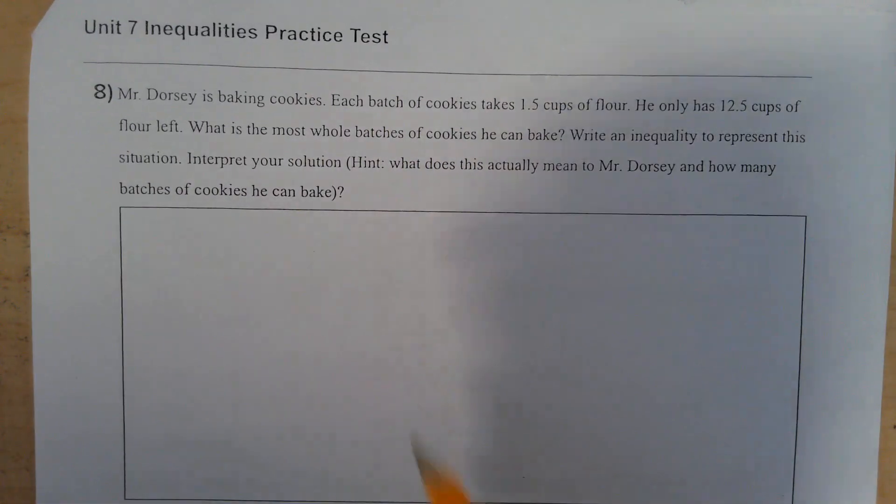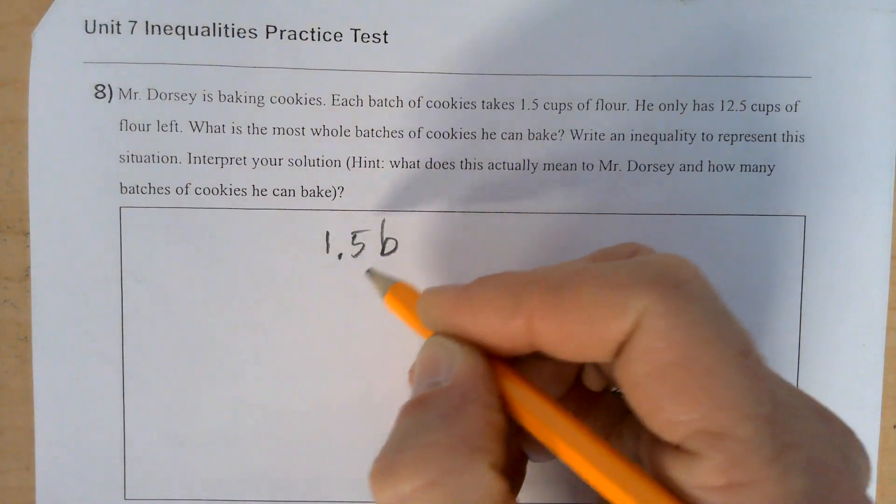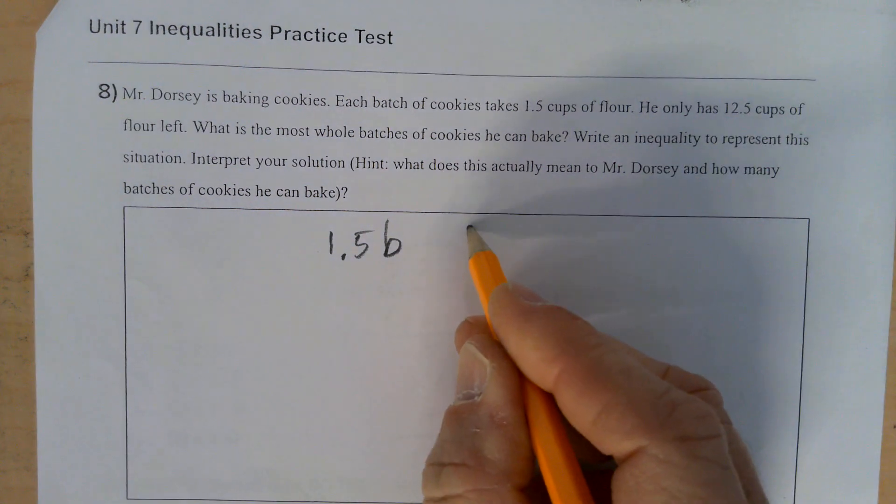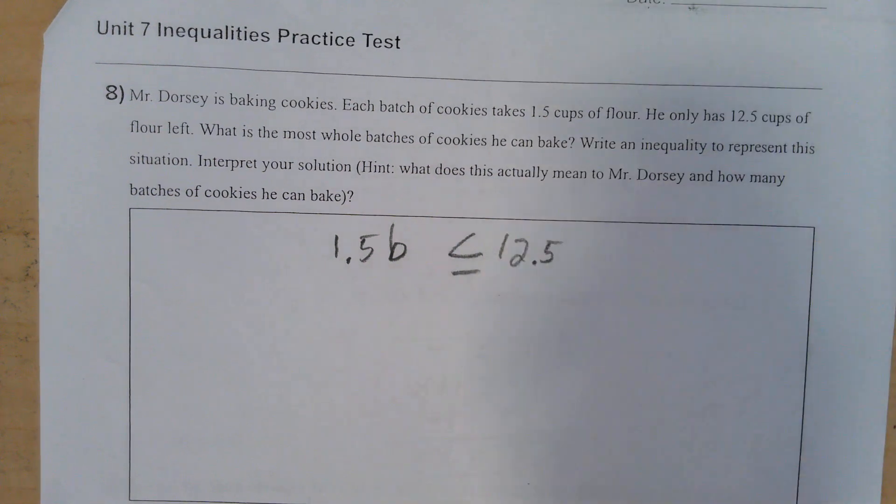So let's see. I have 1.5 cups per batch, so I'm going to call it 1.5b. And that's all I'm doing to it, and I'm limited to my 12 and a half cups. So it's going to be less than or equal to 12.5.